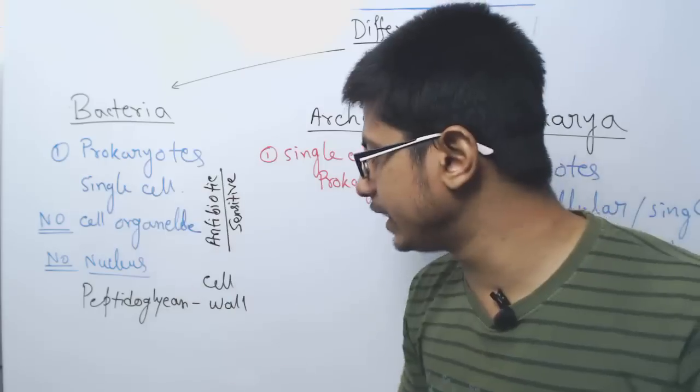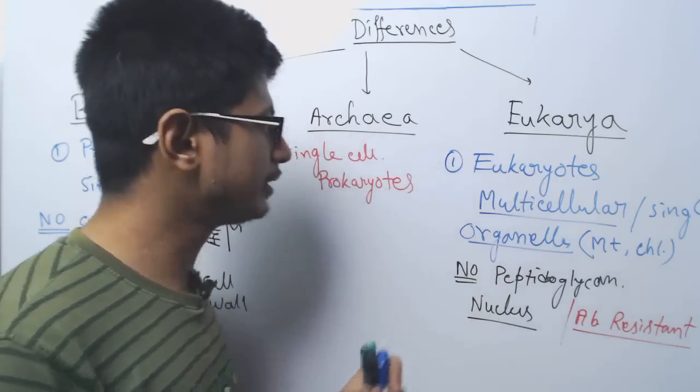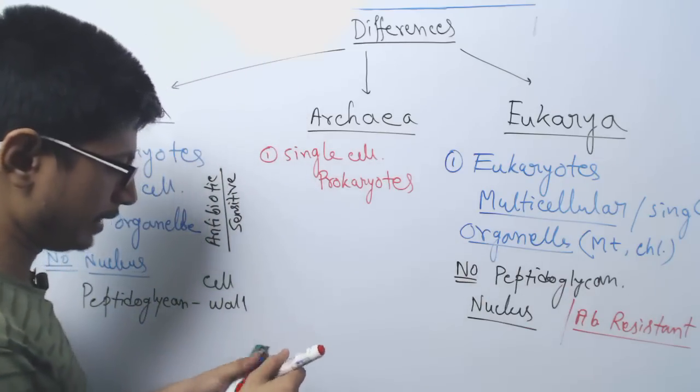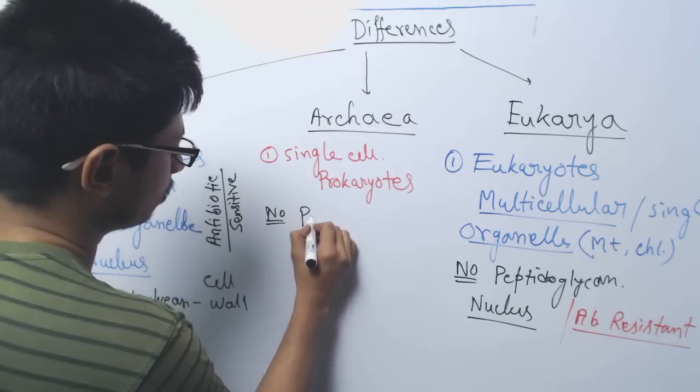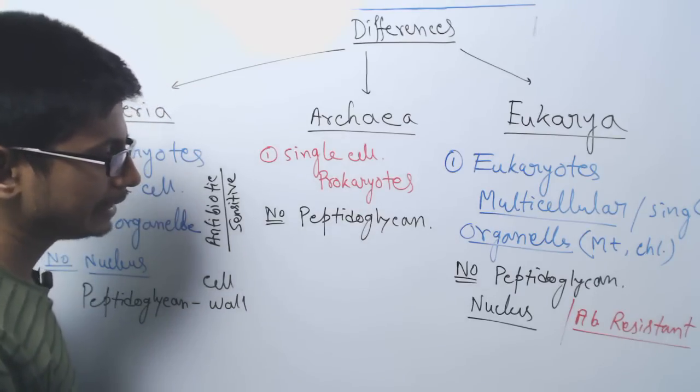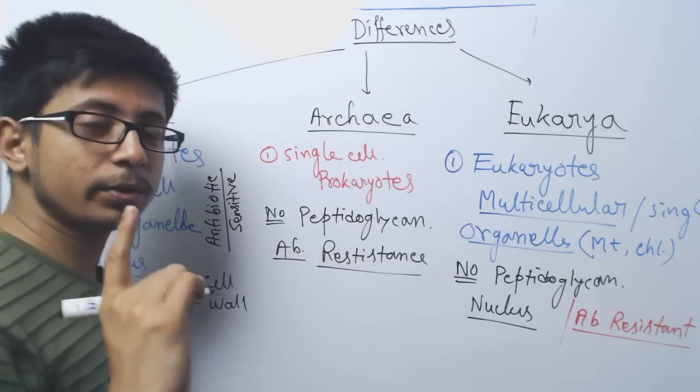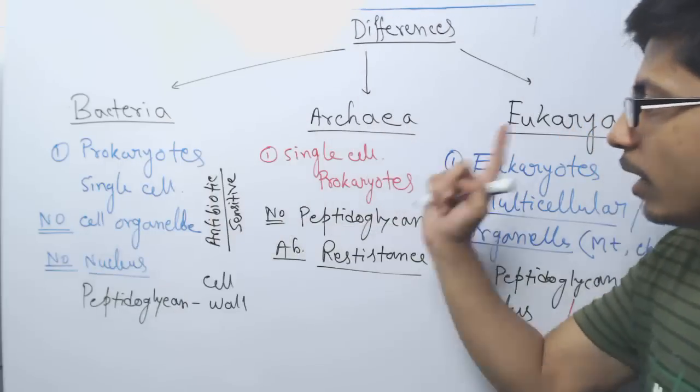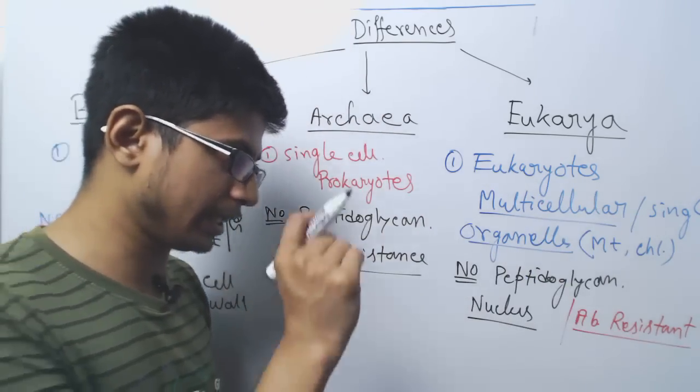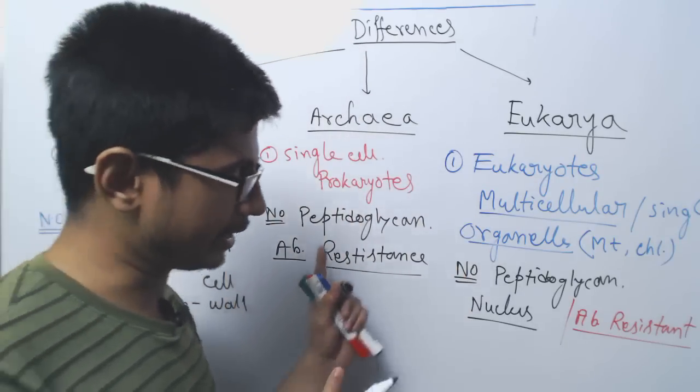Now the difference they have with bacteria is that archaea have similarities with eukaryotes. What are the similarities? There is no peptidoglycan found as a layer of archaea. No peptidoglycan in the cell wall. And archaea is also antibiotic resistant. Antibiotics which are going to kill bacteria, if you give the same antibiotic to archaea, it will survive. But there are some antibiotics which are eukaryotic antibiotics that can kill eukaryotic cells. If you give those antibiotics, it is going to kill archaea. This is the similarity between eukarya and archaea.